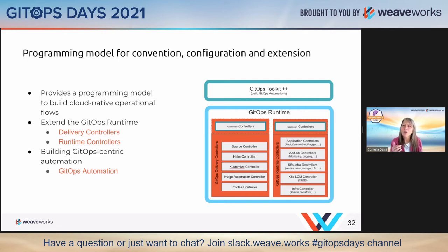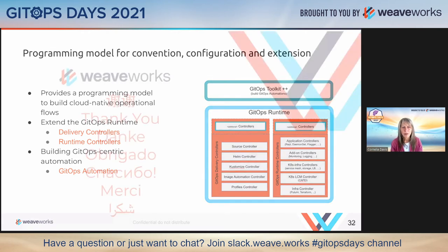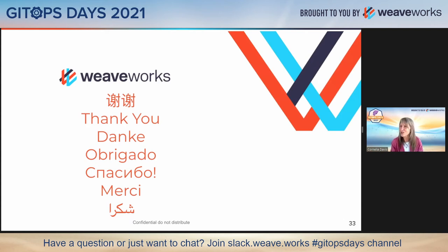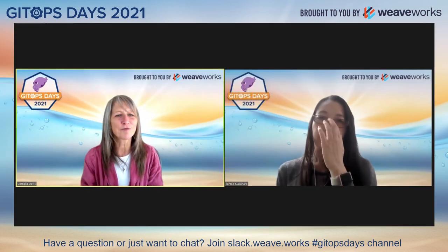What you're doing here is understanding the programming model. You don't necessarily need to program all these elements. ACK has already programmed the additional controllers. WeGo gives you the GitOps automations. This is the programming model that allows end users — and more importantly, third-party service providers — to provide the right things so our joint customers can GitOps all the things. I think I'm just about perfectly on time. I thank you for your attention; we have a minute or two for questions. I'll invite Tomo back to wrap up this last session and reflect on the day.